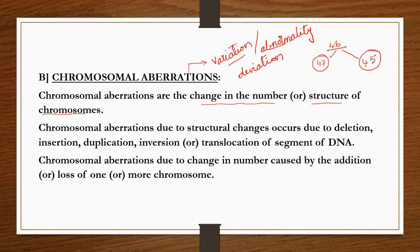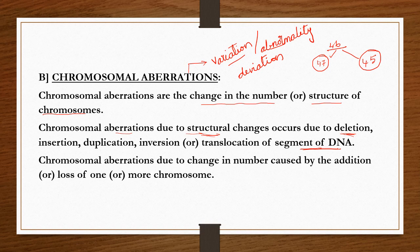Chromosomal aberrations can arise in two ways: by changing their number or by changing the structure of the chromosome. Structural changes in the chromosome occur due to deletion, insertion, duplication, inversion, or translocation of a segment of DNA. Any change in this DNA segment leads to deviation in the chromosome structure.